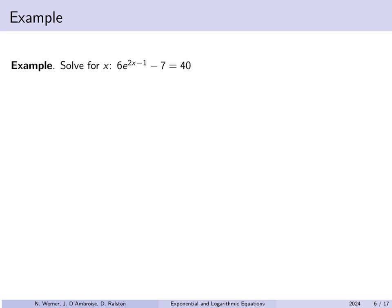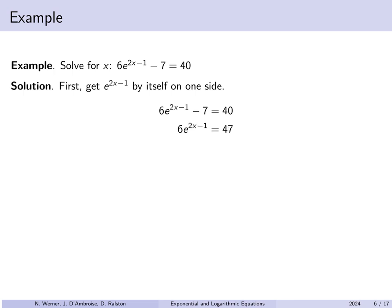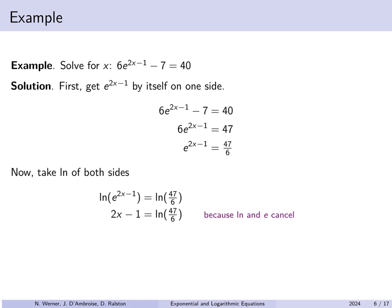Solve for x: 6·e^(2x-1) - 7 = 40. We isolate e^(2x-1) by adding 7 to both sides and dividing by 6, giving e^(2x-1) = 47/6. Now we have one base to a power equals a constant, so we take the natural log of both sides. The natural log of e^(2x-1) simplifies to 2x - 1 = ln(47/6). Solving for x is then straightforward: add 1 and divide by 2.